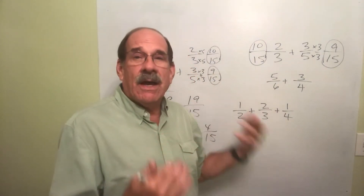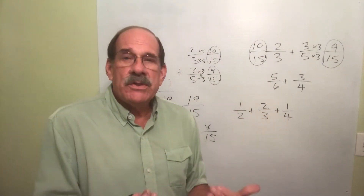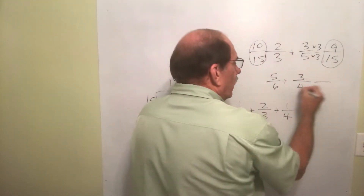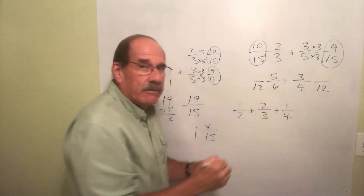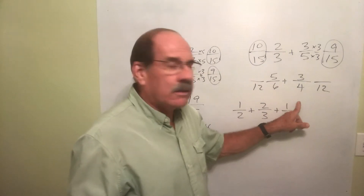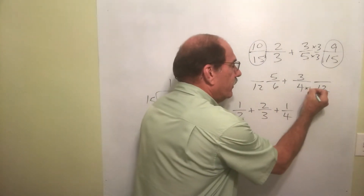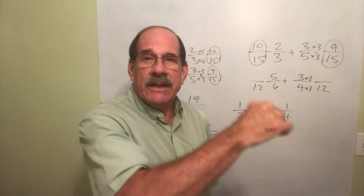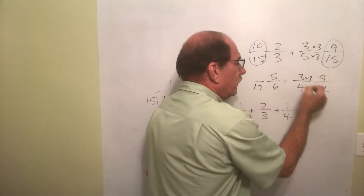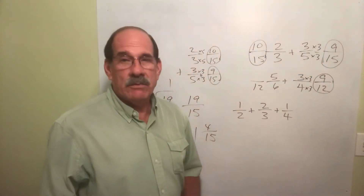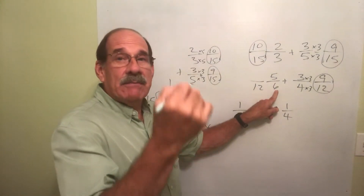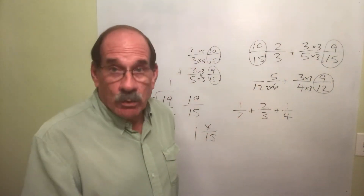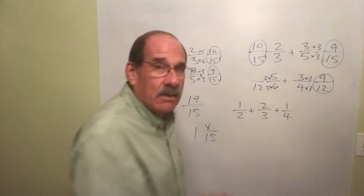I'm going to enlarge both of these. I can enlarge each into something over 12. What do you do to the 4 to convert it into 12? Multiply by 3 — that makes 12. Multiply the top number 3 by the same number 3 to make 9. So three-fourths becomes 9/12. What do I do to the 6 to make it into 12? Multiply by 2, making 12. The top number gets equal treatment — multiply 5 by 2 also, that makes 10.